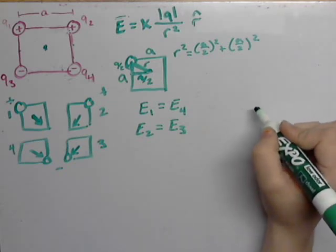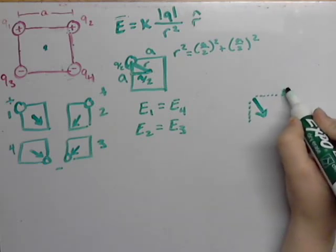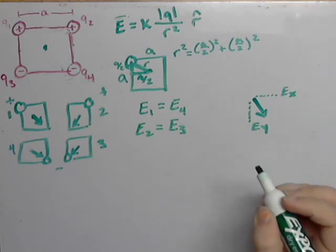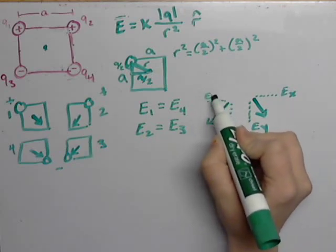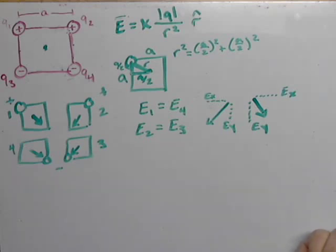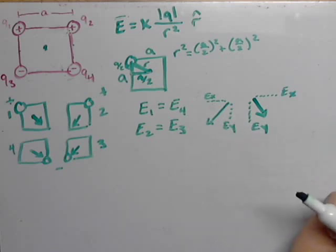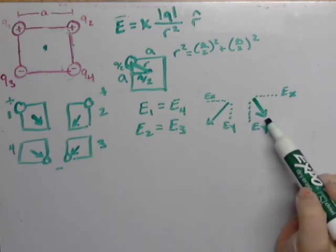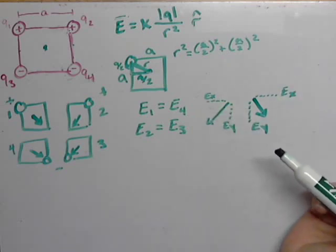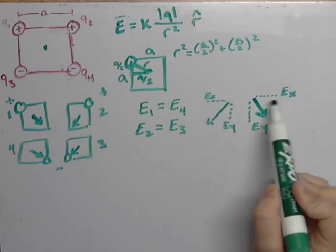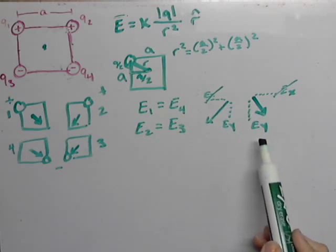We can take either E1 or E4 and break it up into components. And then we can take either E2 or E3 and break it up into components. Now, we know that the magnitude of E1 and E4 is equal to the magnitude of E2 or E3. Therefore, when we break it up into components and we're dealing with directions now, since this magnitude is equal to this magnitude but they're pointing in opposite directions, they cancel out. That means all we have to deal with are the Y components.